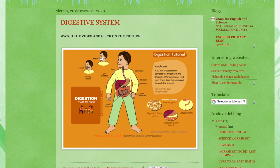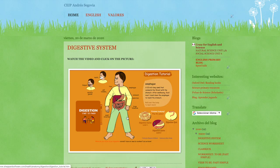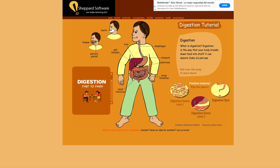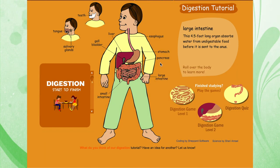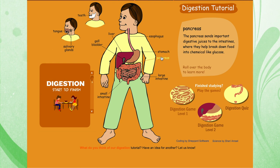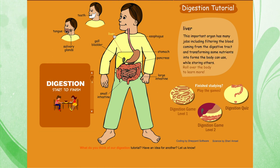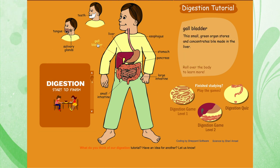I am going to explain to you what you are going to do on this blog activity. First, you are on the blog and you click on the picture. When you click on the picture, you are inside the activity. And what you have to do is move the mouse around the different words in the picture and pay attention to the information that the activity gives you.